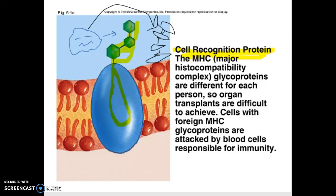The problem is sometimes our immune system gets confused and attacks things it shouldn't. If you've ever heard of autoimmune disorders, rheumatoid arthritis is probably the best example — your immune system is attacking your own body cells when it shouldn't. It's confused, and that's a problem.